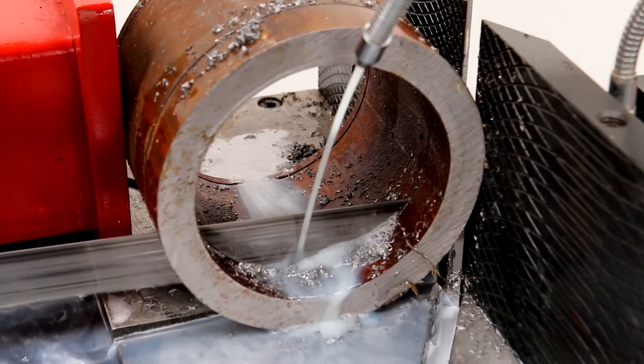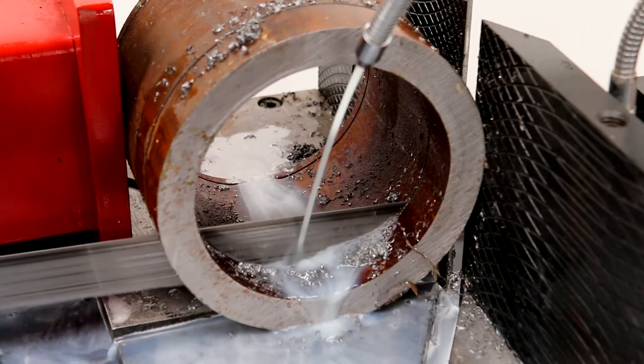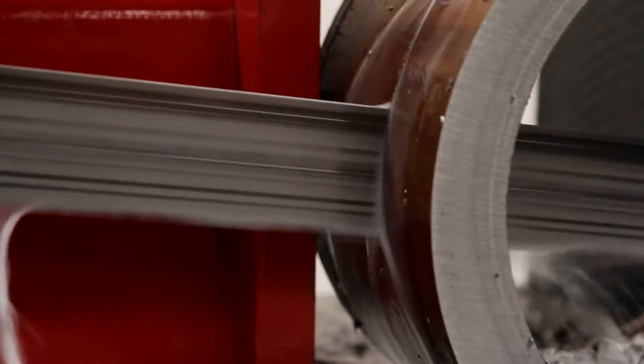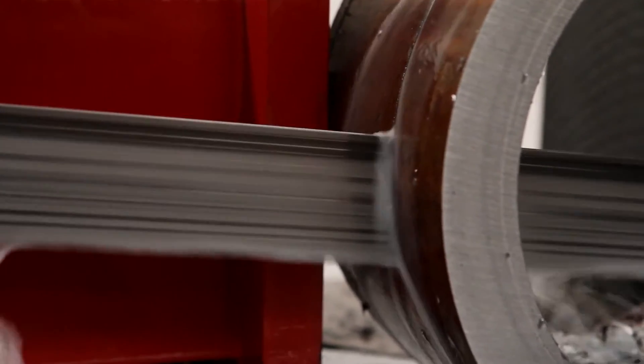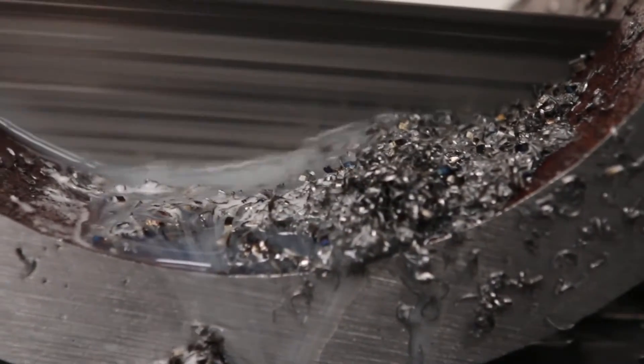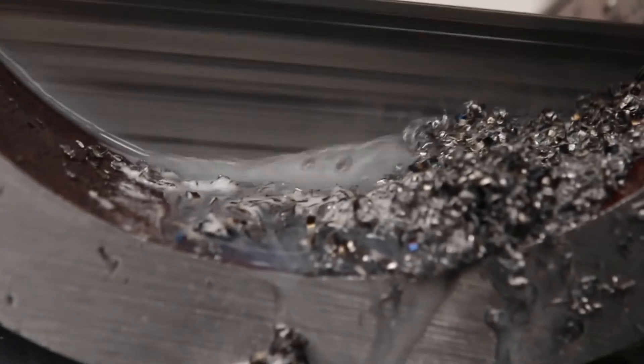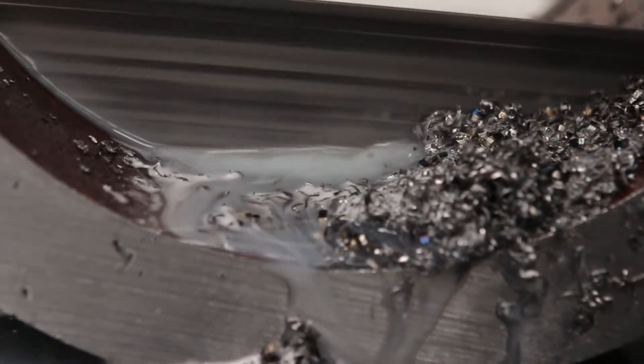Furthermore, cutting fluid creates a film between the chip and bandsaw blade. This separates all the microscopic bumps in the surface and reduces friction. The components of cutting fluids like chlorine and sulfur also help lubricate the cut.